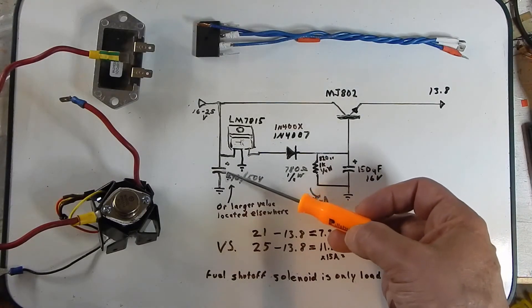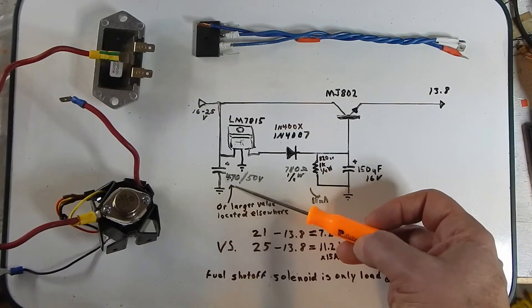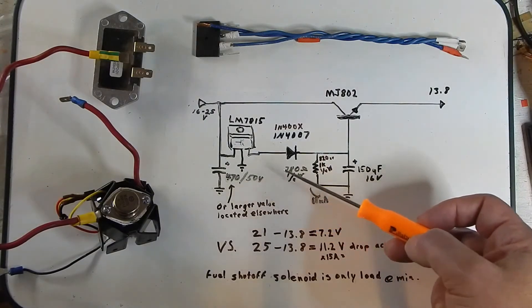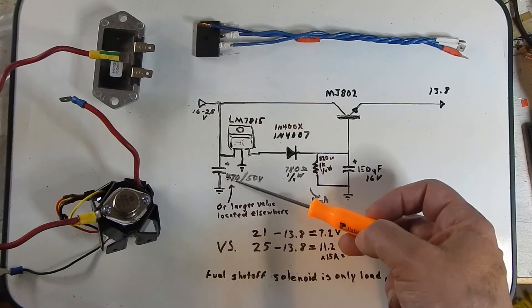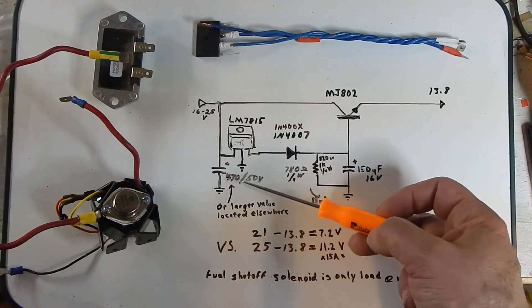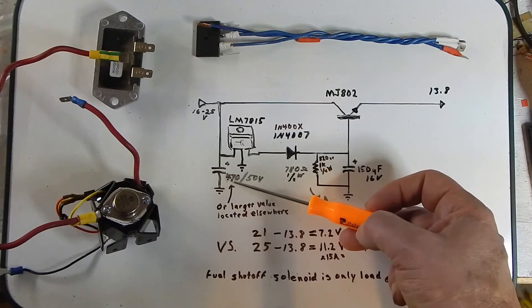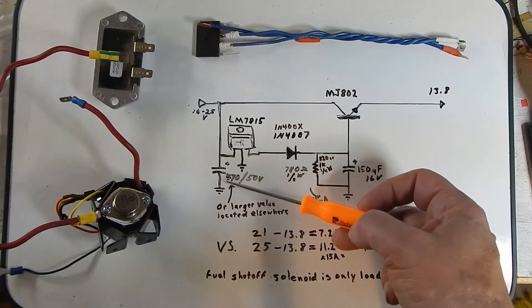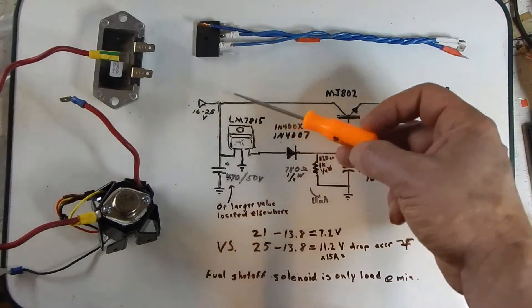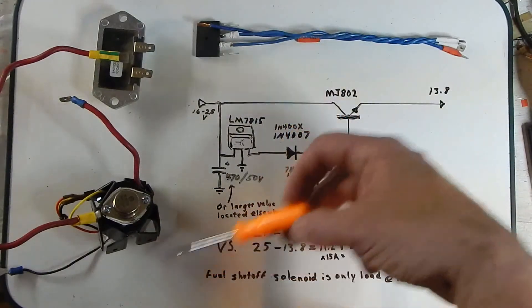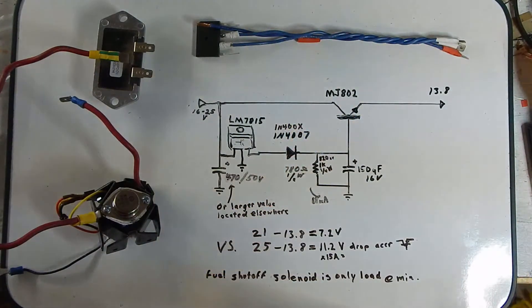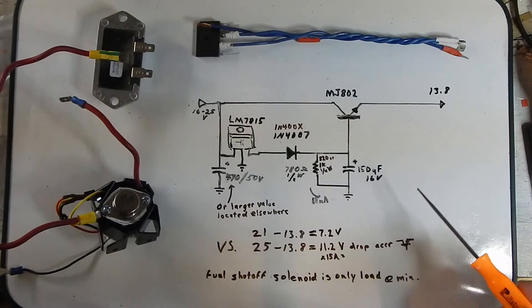And this cap here could actually be made a lot bigger. I used a 470 at 50 volts. But you could go, I would use at least a 50 volt rating. But you can go a lot higher on the capacitance and then put this remotely. Don't put it in the circuit at all. Put it somewhere else. You know, off by itself, maybe. Yeah, one idea.